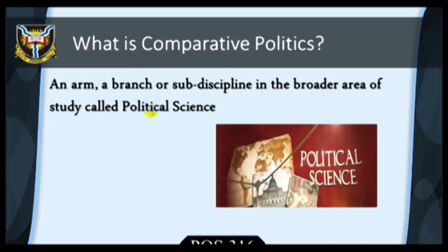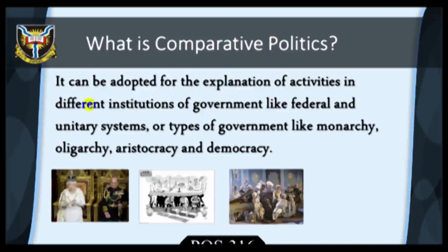For further illustration, students should be informed that comparative politics can be adopted for the explanation of activities in different institutions of government, like federal and unitary systems, or types of governments like monarchy, oligarchy, aristocracy and democracy.